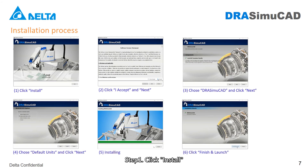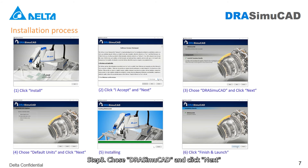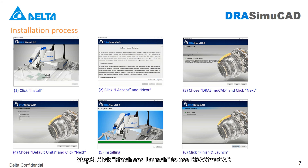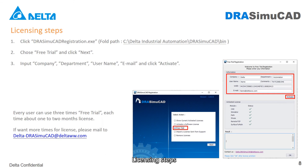Installation process. Step 1: Click Install. Step 2: Click I Accept and Next. Step 3: Choose DI Simu CAD and click Next. Step 4: Choose Default Units and click Next. Step 5: Wait for the installation to finish. Step 6: Click Finish and Launch to use DI Simu CAD.